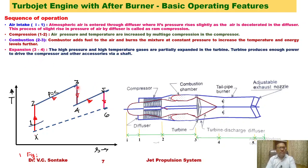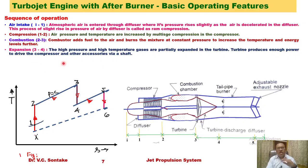The expansion process (3 to 4) is represented by a vertical line on the T-S diagram and is also considered isentropic. It takes place in the turbine. During this process, the high-pressure, high-temperature gases are partially expanded from pressure P3 to P4 only. The turbine produces enough work output to drive the compressor and other accessories via a shaft.